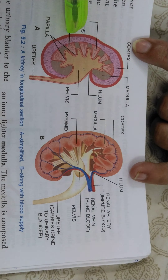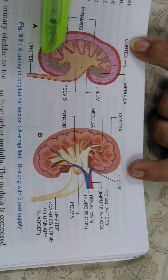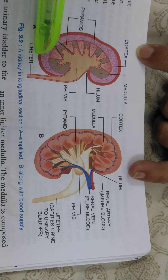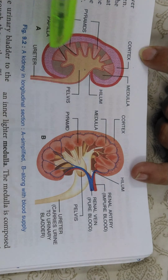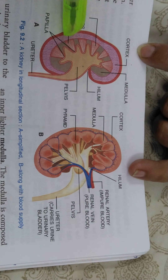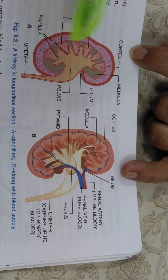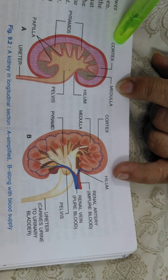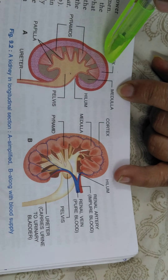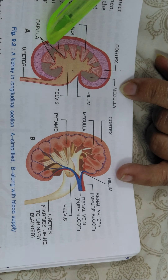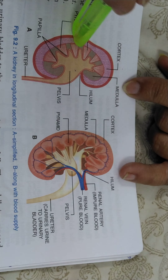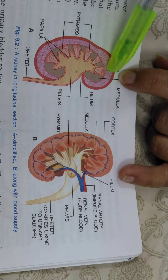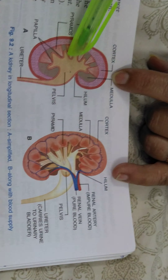Now we talk about the longitudinal section of the kidney. The kidney has an outer protective membrane called the capsule, which is made up of epithelial tissue and is protective in nature. Then we have two parts of the kidney — the outer part called the cortex and the inner part called the medulla. The outer cortex is darker in color because it has a dotted appearance, which is some part of the nephron, which we will see in the next part.